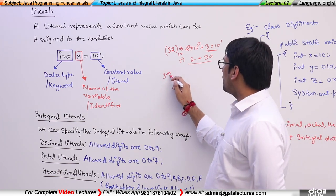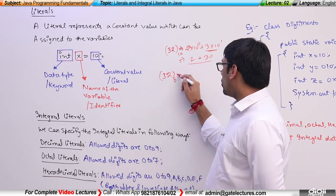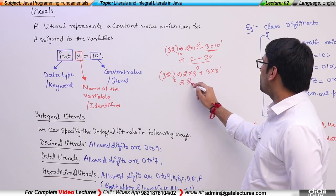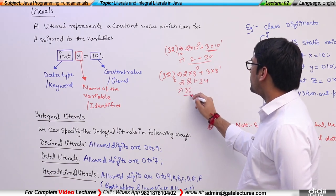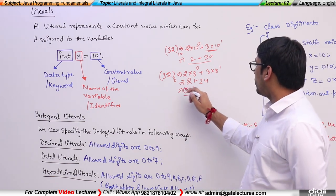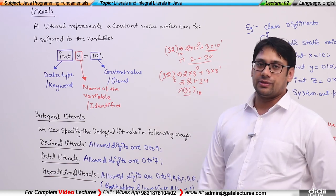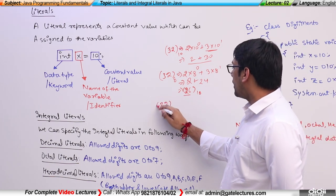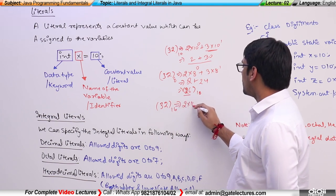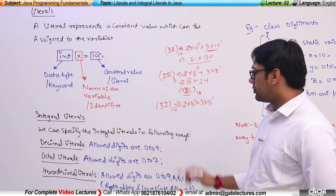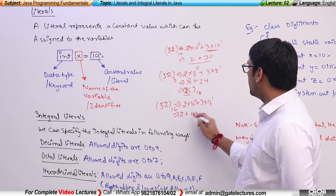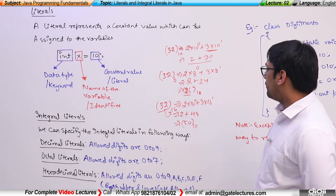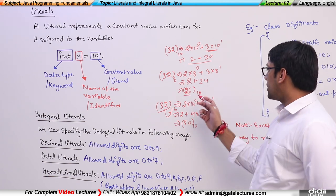The same number 32 written in octal (base 8) equals 2×8⁰ + 3×8¹ = 2 + 24 = 26 in decimal. Written in hexadecimal (base 16), 32 equals 2×16⁰ + 3×16¹ = 2 + 48 = 50 in decimal. So 32 in hexadecimal represents 50 in decimal, and 32 in octal represents 26 in decimal.